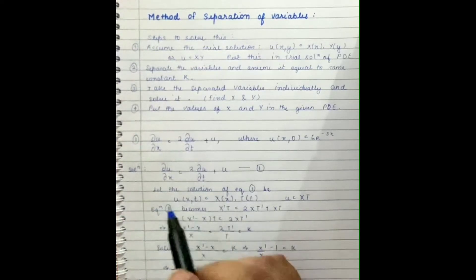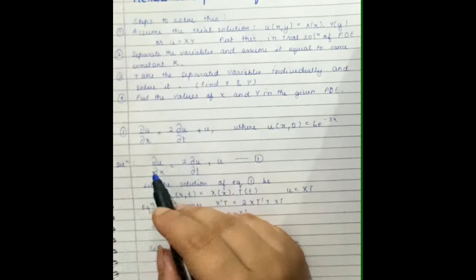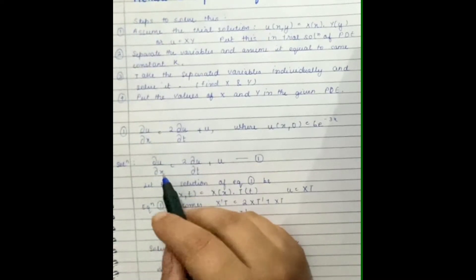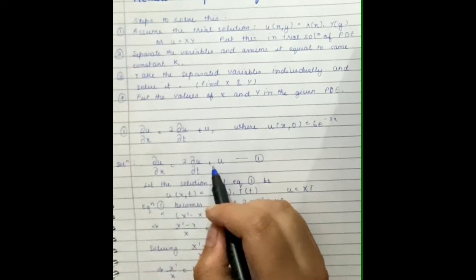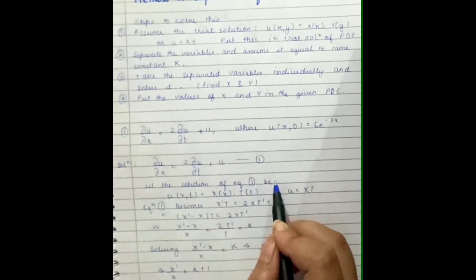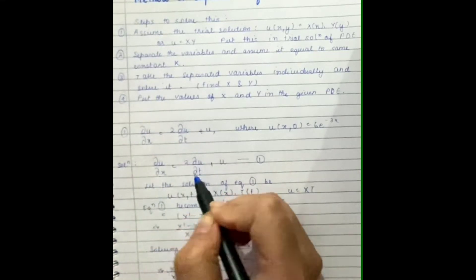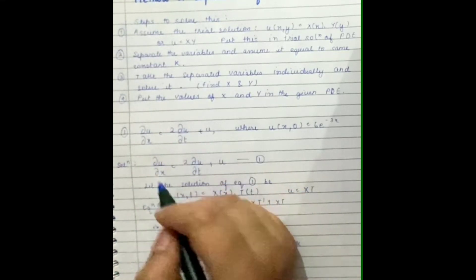Now let's see what we have done here. ∂u/∂x = 2∂u/∂t + u. Let the solution of equation 1 be u as a function of x and t, because x and t are the independent variables here and u is the dependent one.